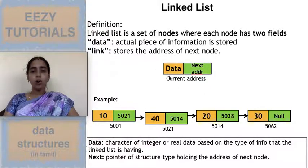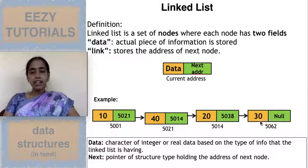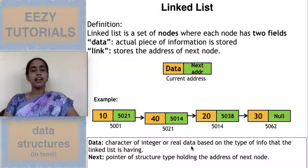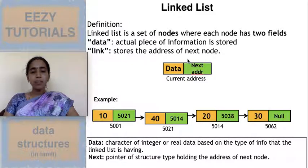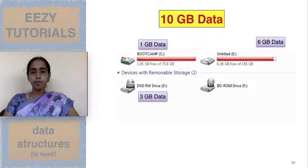A linked list has two components: data and the address of the next node. The first node is called the head and the last node is called the tail. The data type of the data can be integer, character, or character array. The next part will always be a pointer. We'll be using structures in the implementation, and more detail will be seen in the implementation part.